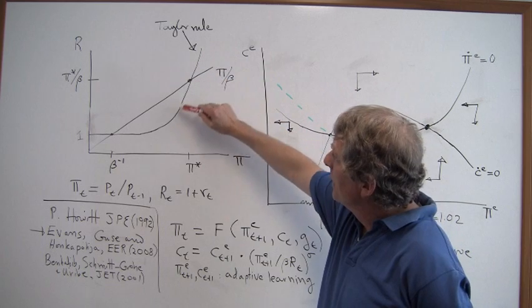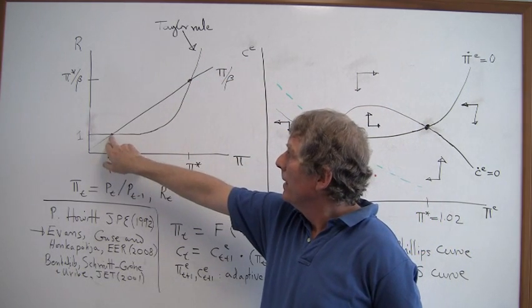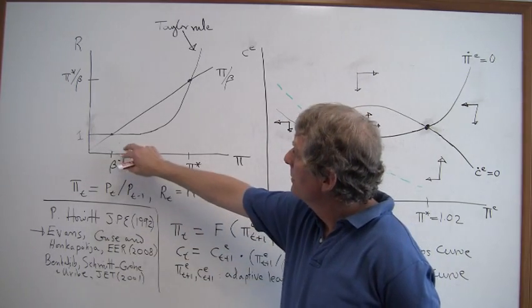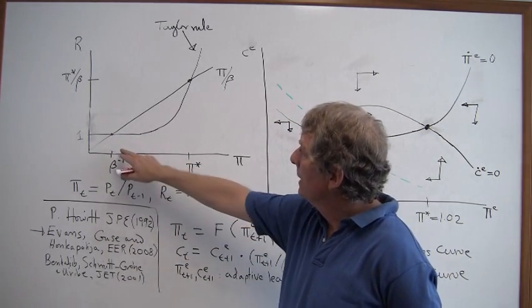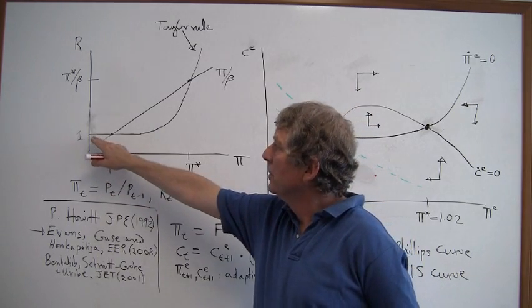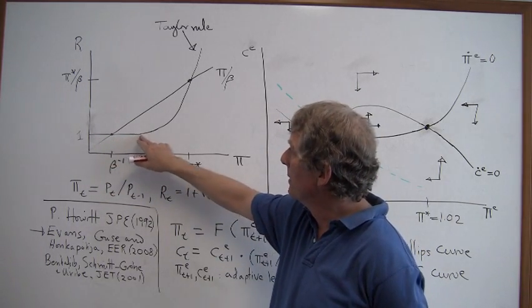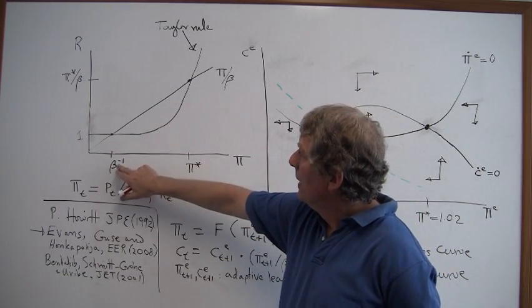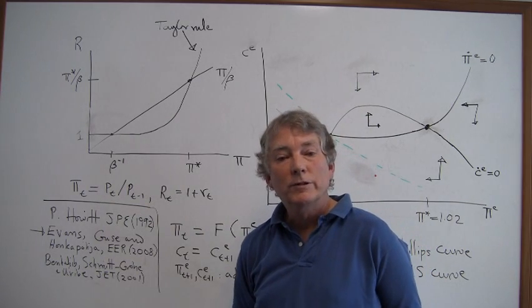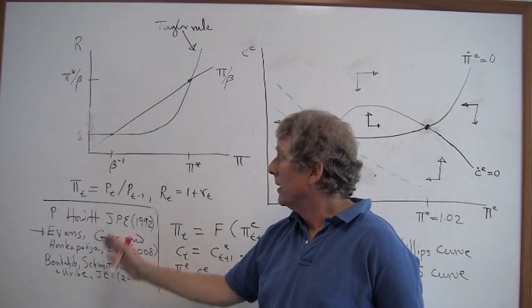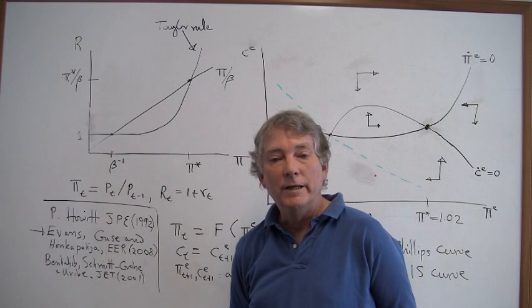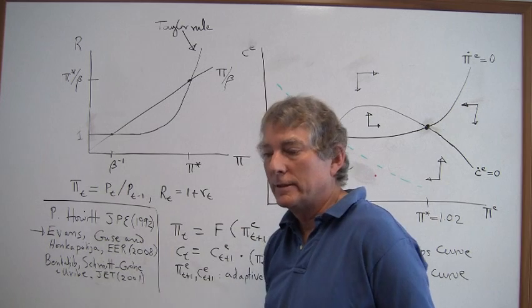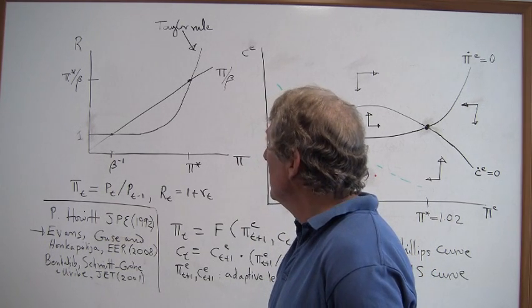So what Benhabib-Schmitt-Grohe-Uribe pointed out was that because of the zero interest lower bound, and here that corresponds to an R equals 1, there's got to be another steady state. And that would be at whatever the minimum interest rate is that policymakers choose. Here I've represented it as 1 below some threshold inflation level. And at beta inverse, which corresponds to a deflation rate of whatever beta inverse is, if it's, it'll be 1% if beta is approximately 0.99.